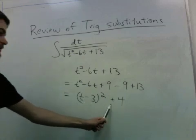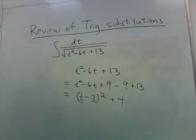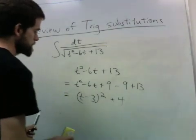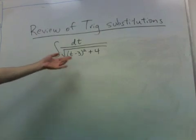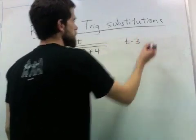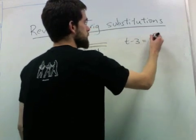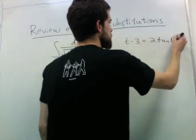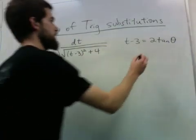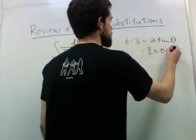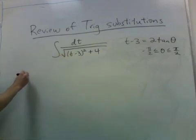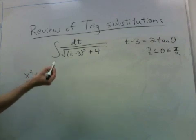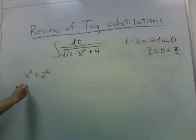But since we have something squared plus something squared, it will be a tangent type of problem. Let me just put this in up here. So the thing we have here doesn't have to be x. It can be something a little more complicated. So I'll substitute t minus 3 is 2 tangent theta, where theta goes from negative pi over 2 to pi over 2. And this is just like the case where you have x squared plus 2 squared. In this case, you would be substituting x equals 2 tangent theta.